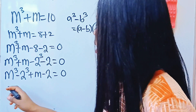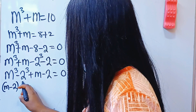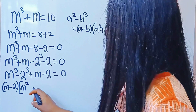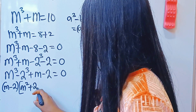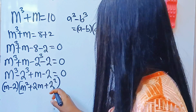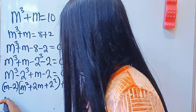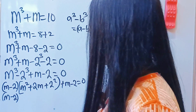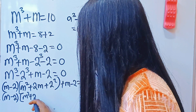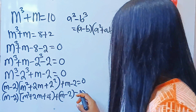So let's substitute. We are going to have a minus b, that is m minus 2, multiplied by a squared — that is m squared — plus ab, that is 2 times m, which is 2m, plus b squared, that is 2 squared. Plus m minus 2, all equal to 0. So we have m minus 2, and opening our bracket: m squared plus 2m plus 4, plus m minus 2, equal to 0.